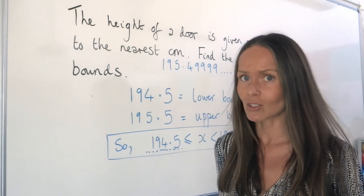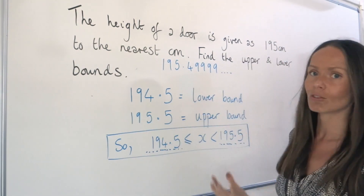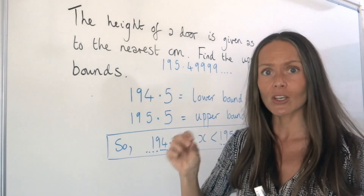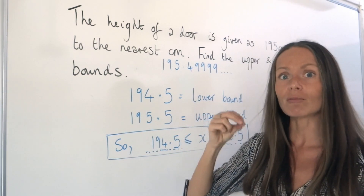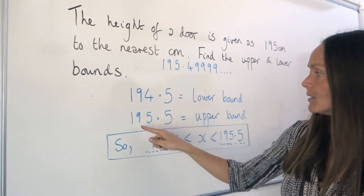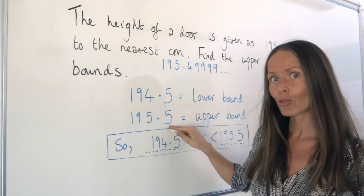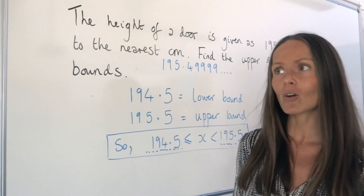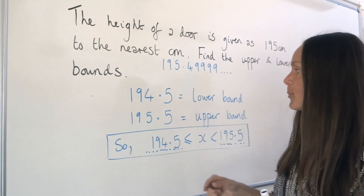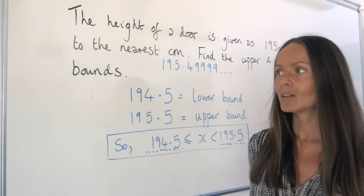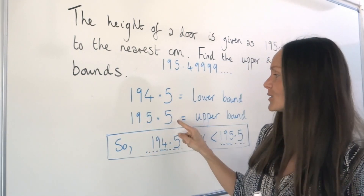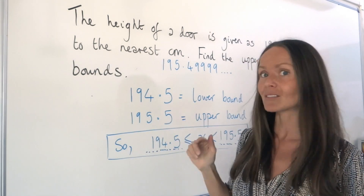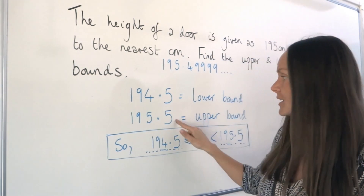Having a recurring number is a little bit messy to write out, so what we do is write down the turning point — the number at which point we start rounding up to 196, which would be 195.5. You can see that the 5 here would round this 5 up to 196. So with the upper bound, it's not actually included in the measurement. The upper bound just means the height of the door could have been measured up to 195.5, but not including that number, because that number does in fact round up to 196.